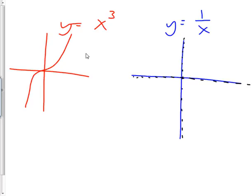So parent points on this guy: 0, 0, 1, 1, negative 1, negative 1. So there's the base graph for x to the third.